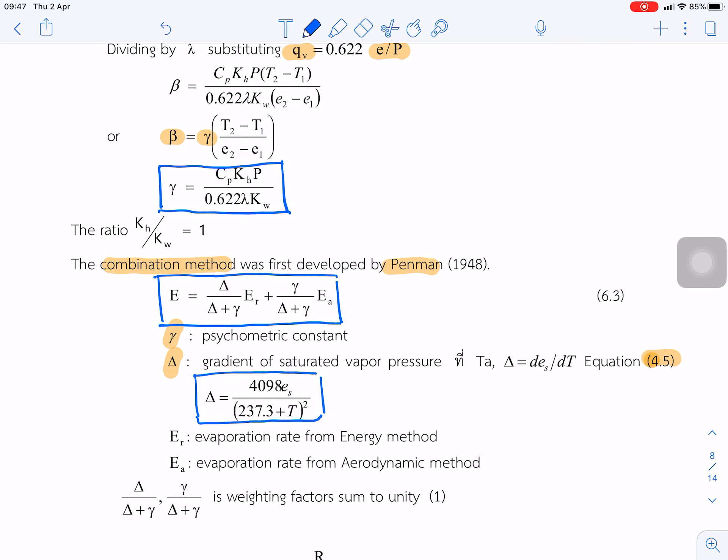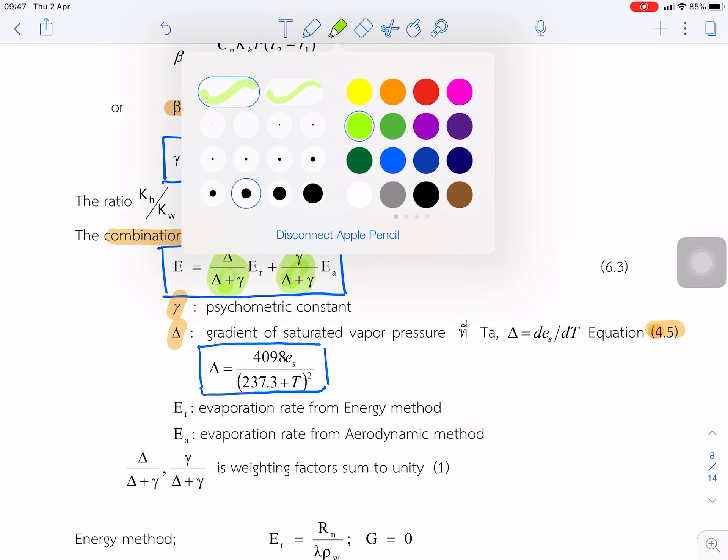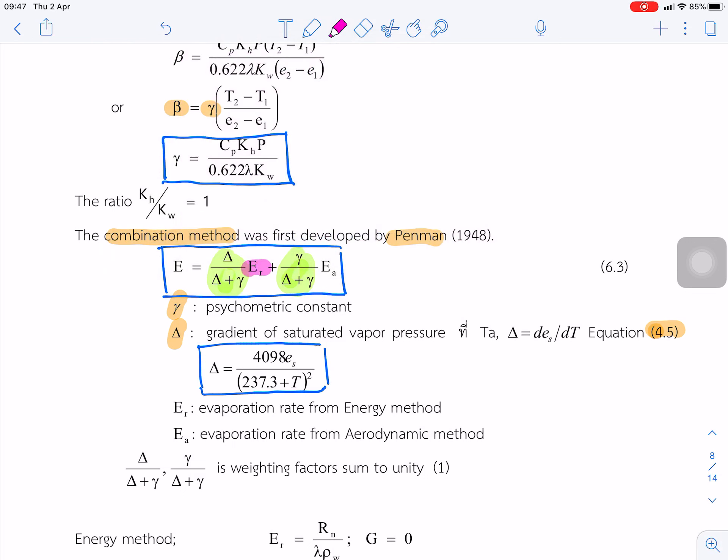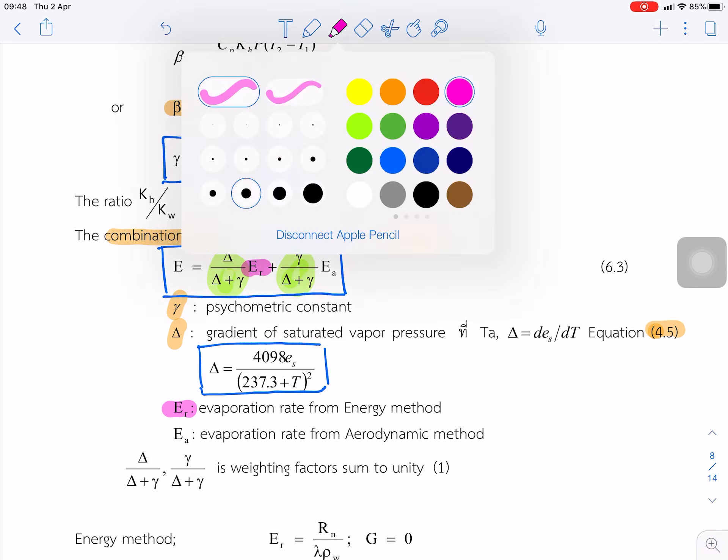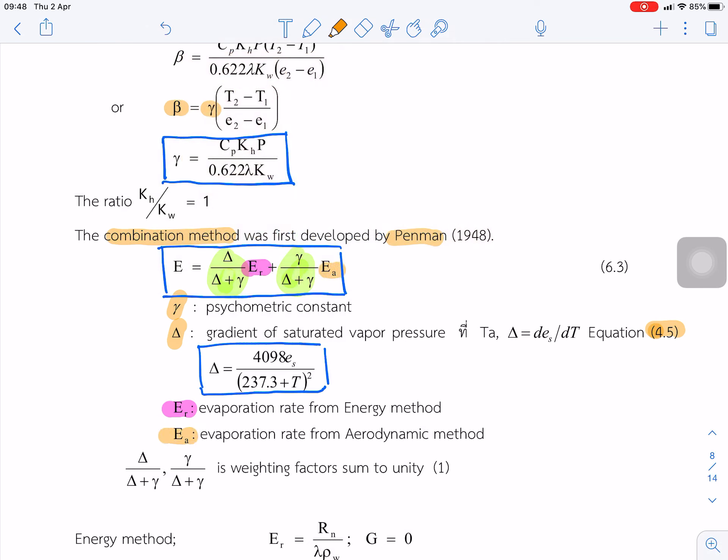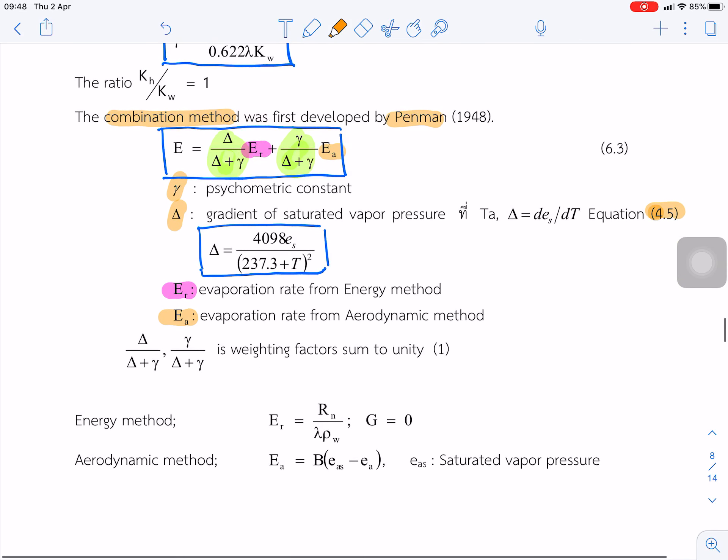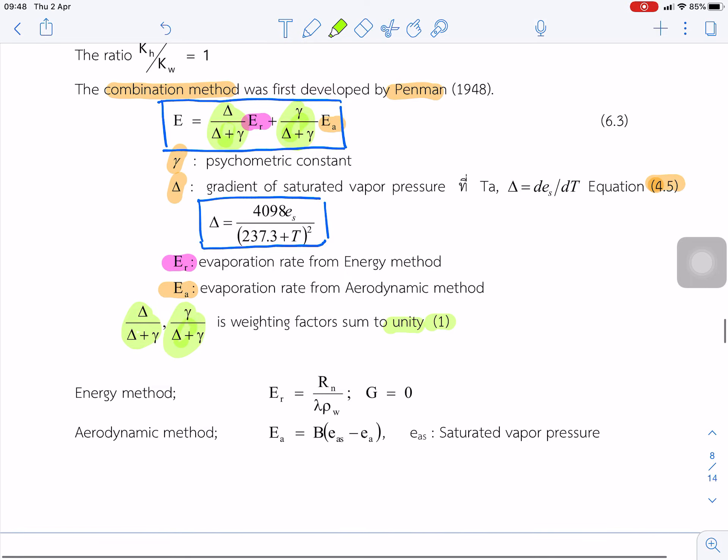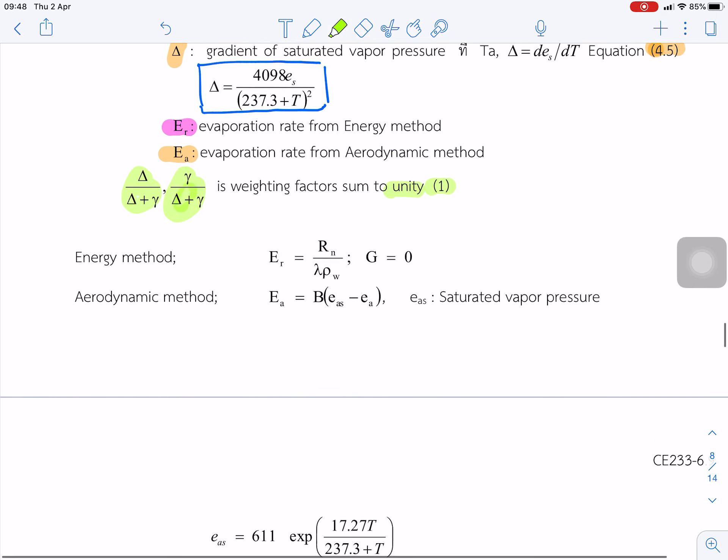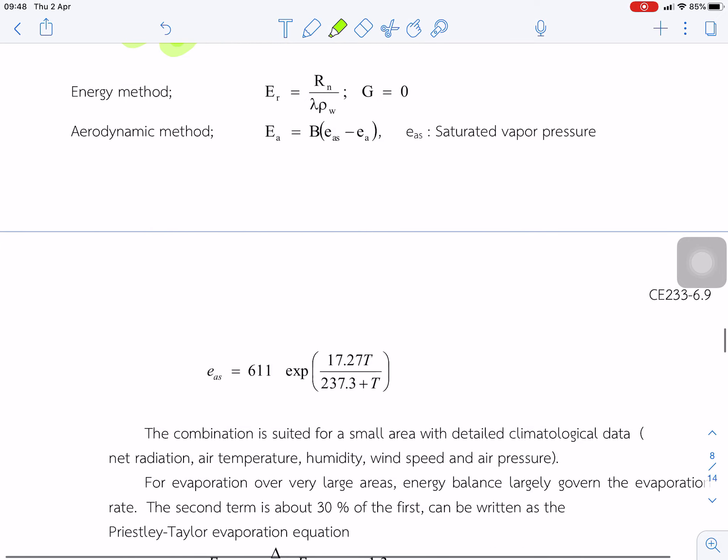And gamma and delta is to be like the weighting factors. This one is like the weighting factor in front of the Ei from energy and Ea from aerodynamics. This weighting factor, this combination, should be one. The weighting factors sum to unity.